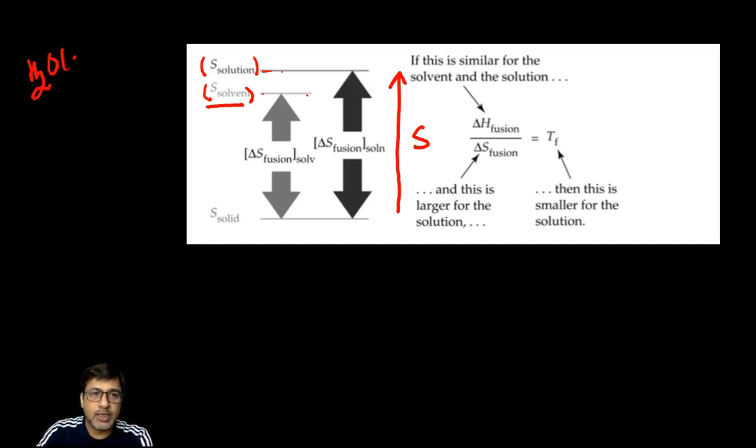Water H2O liquid converts to H2O solid at the freezing point. Solid water has constant entropy whether it is solution or solvent. Now when you have pure solvent, delta S value is different than delta S prime which is for the solution.